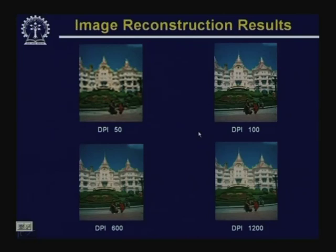We have covered the first phase of the image digitization process — sampling — and seen through examples how varying the sampling frequency below and above the Nyquist rate affects the quality of the reconstructed image. Now let us go to the second phase: quantization of the sample values.